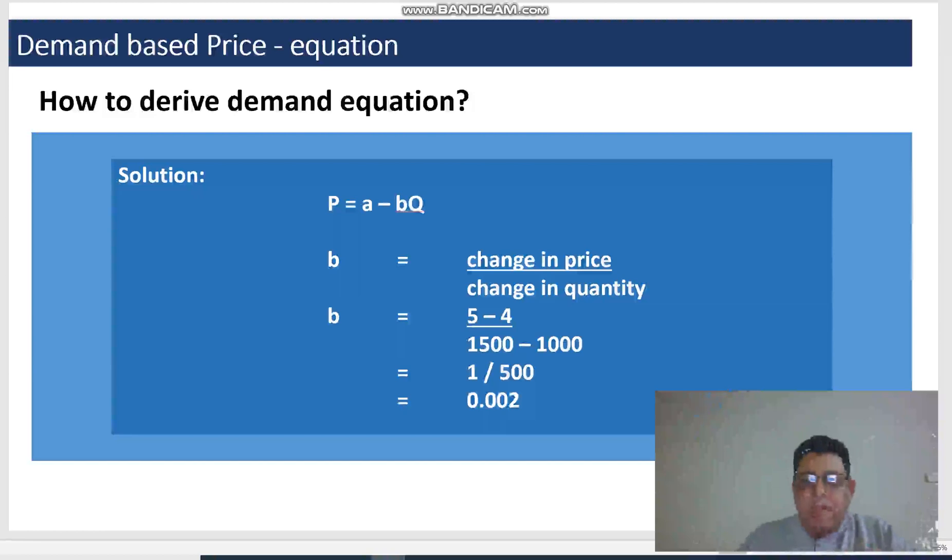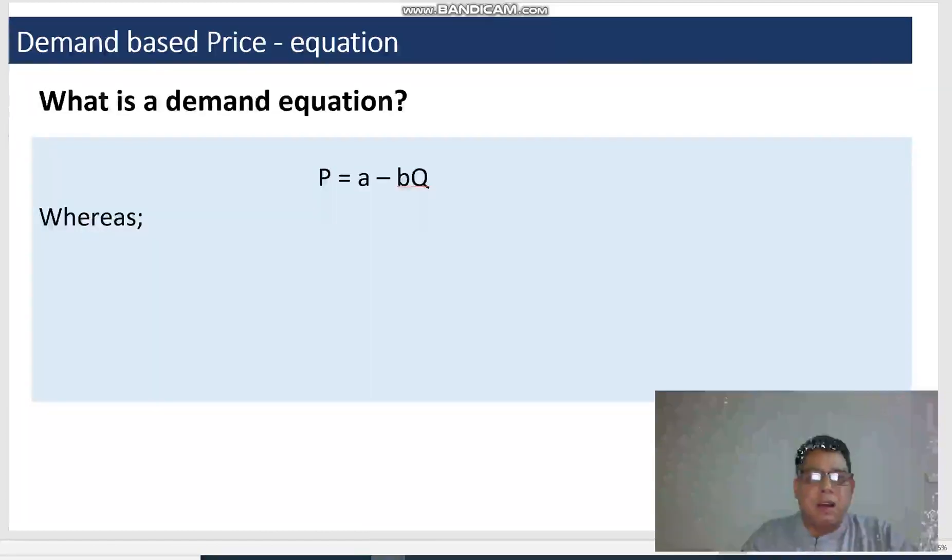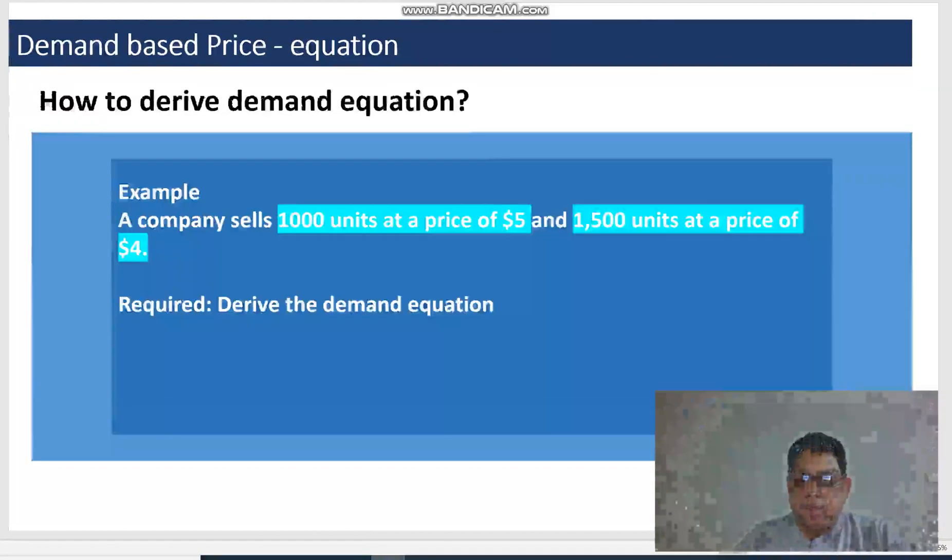So once the B value has been calculated, then we are going to substitute this B value into either pair of price and quantity given in the demand formula. If you look at the original data, there were two combinations of price and quantity, so I can substitute into the first one. You can substitute into the second pair of price and quantity, we all should get the same answer.